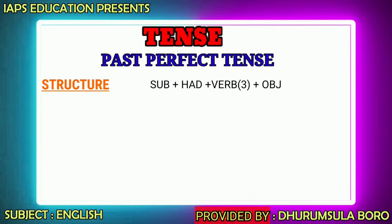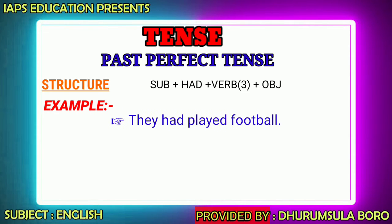The structure is: Subject + had + past participle form of a verb + object. For example: 'They had played football.' Here 'they' is the subject, 'had' is the auxiliary verb, 'played' is the main verb, and 'football' is the object.